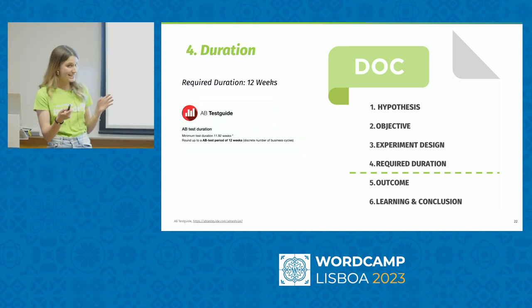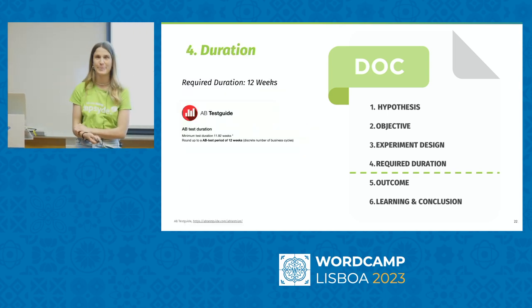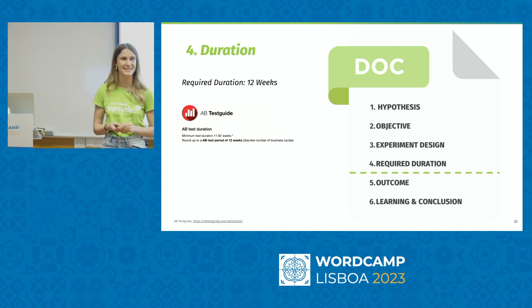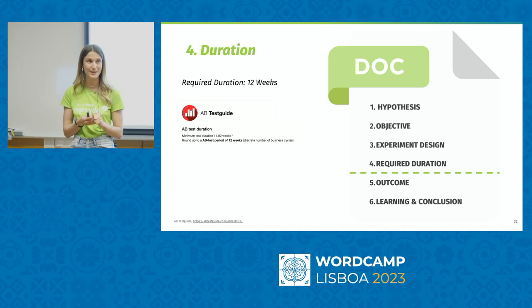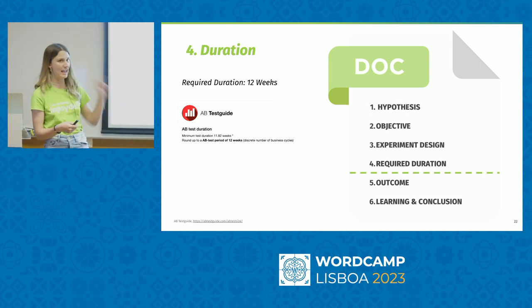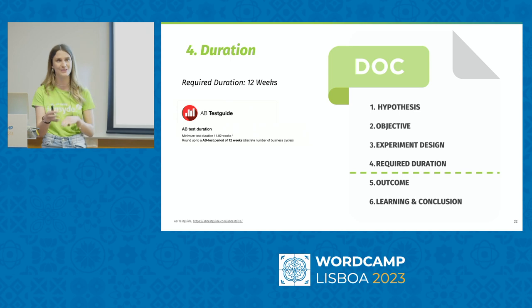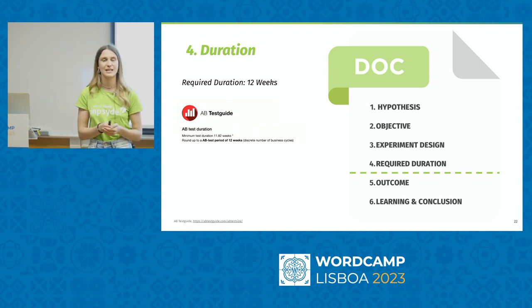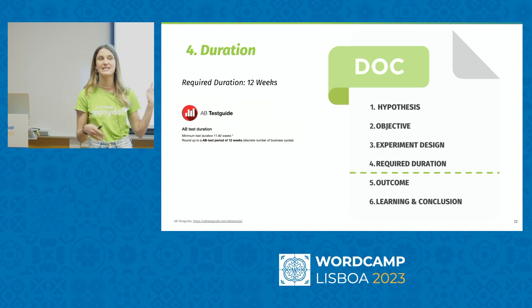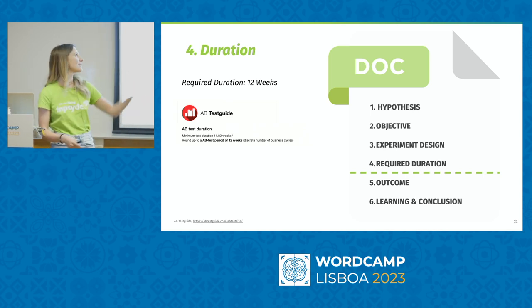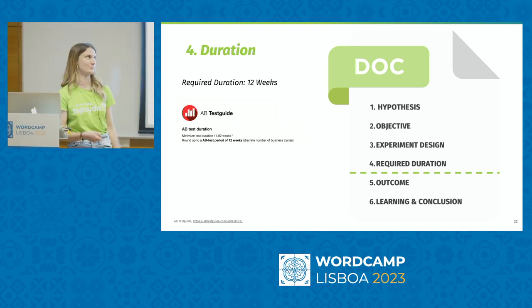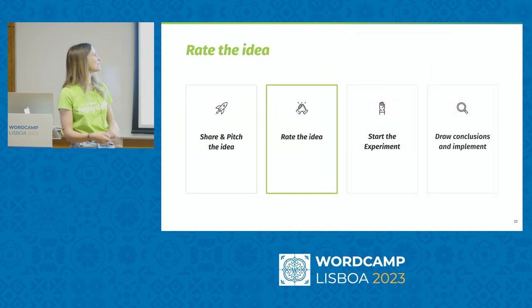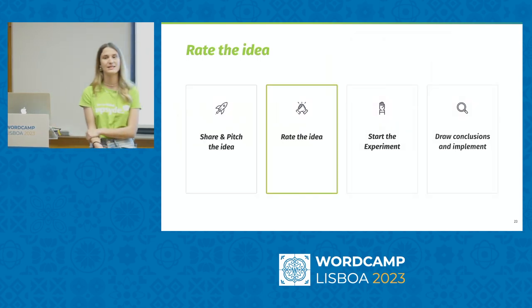The last element before testing is the duration. Many people ask: how long should we run the test? It depends — there's no fixed number. But there's a great tool called the A/B Testing Guide, which I've linked for you. You input unique visitors and other metrics and it tells you how long the test should run. Our test needed to run 12 weeks for a statistically significant result.